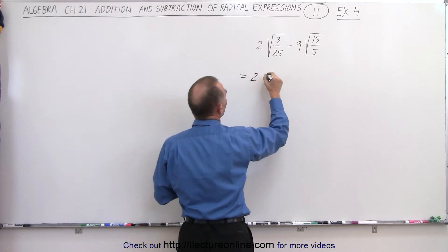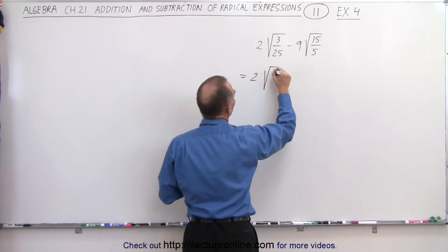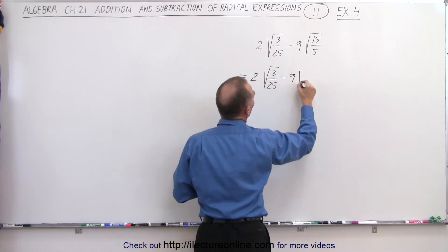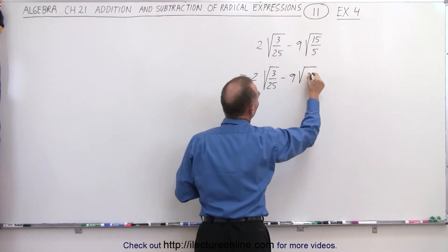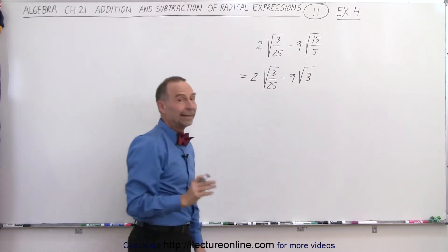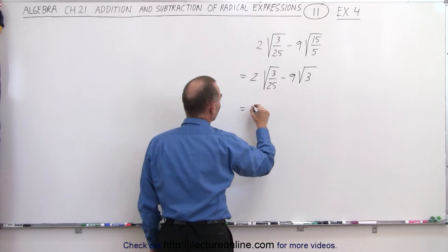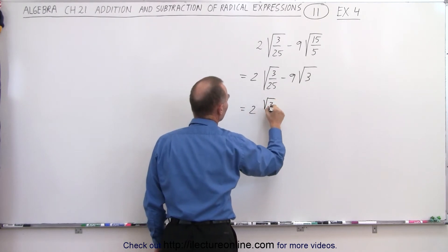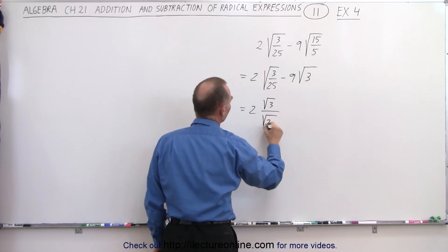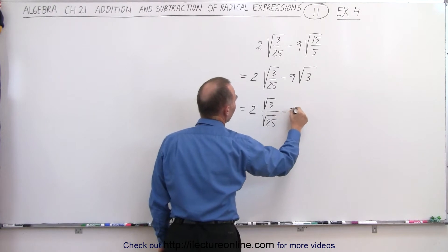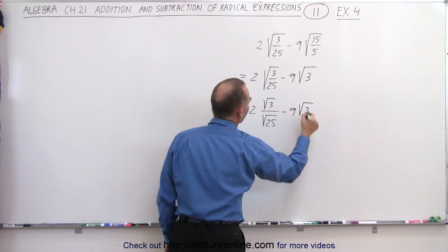This is equal to 2√(3/25) minus 9√5, which is 3. And if you still don't see it, that's okay. The next thing would be to separate these two. So this would be equal to 2√3 divided by √25 minus 9√3.